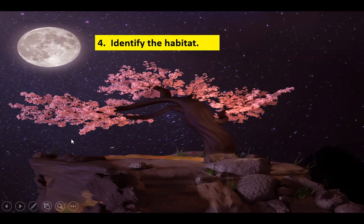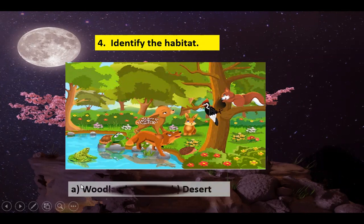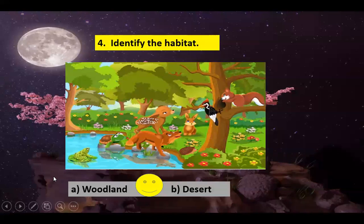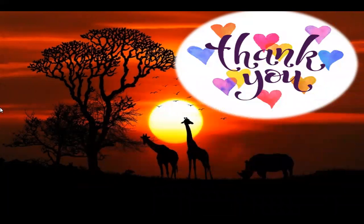Identify the habitat. Look at the picture and identify the habitat. Your options are Option A: woodland, and Option B: desert. The correct answer is woodland. Thank you children, have a nice day. Take care. Bye.